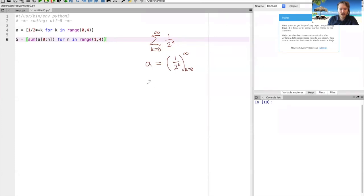So now I have a list of these partial sums. The thing I just created here is S is equal to, and then in here I have the sum where K goes from zero to N minus one of one over two to the K, and then N goes from one to three.